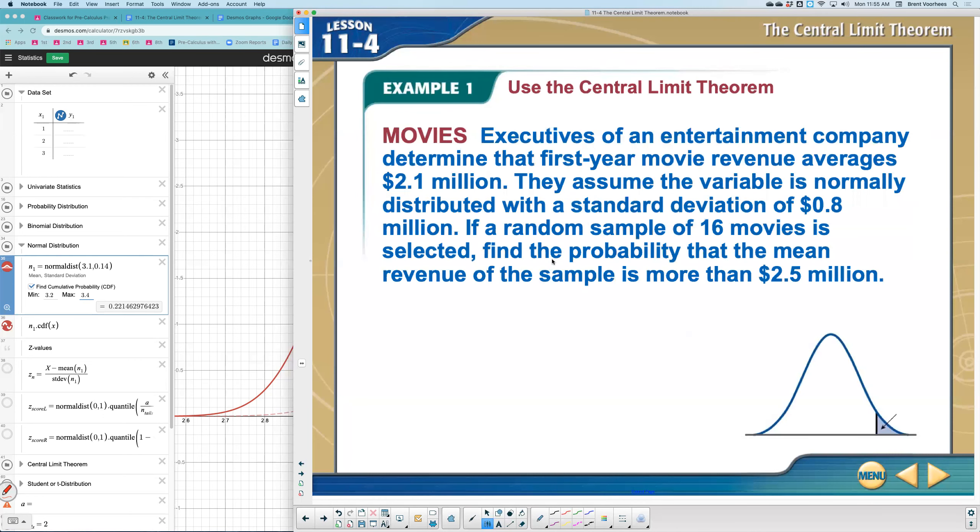It says executives of an entertainment company determined that first year movie revenues average $2.1 million. They assume the variable is normally distributed with a standard deviation of $0.8 million. If a random sample of 16 movies is selected, find the probability that the mean revenue of the sample is more than $2.5 million.